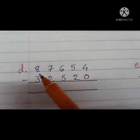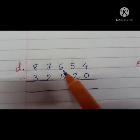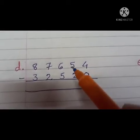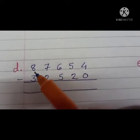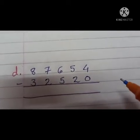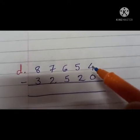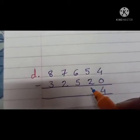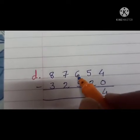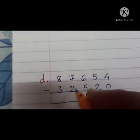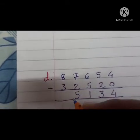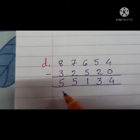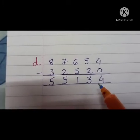Now next, D. 5 digit numbers. 87,654 minus 32,520. 1's, 10's, 100's, 1000's and 10,000's. Let's first subtract the 1's. 4 minus 0, 4. 5 minus 2, 3. Very easy. 6 minus 5, 1. 7 minus 2, 5. And 8 minus 3, 5. Our answer is 55,134.